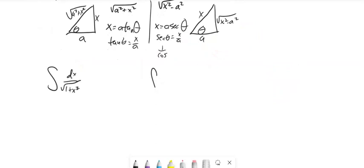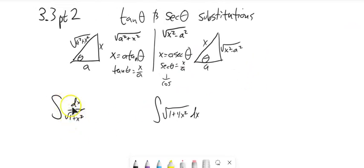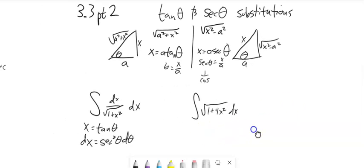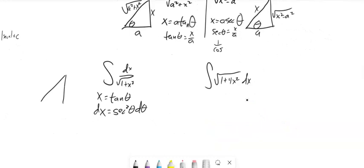Here are some examples. As I look at this integral, I notice I have the square root of 1 + x². So in this case, I have a² + x² where a = 1. My substitution is going to be tangent where a = 1, so x = tan θ. That means dx = sec²θ dθ. I'll sketch my triangle: tangent is opposite over adjacent, x/1, so the hypotenuse is √(1 + x²). That piece shows up in the triangle.